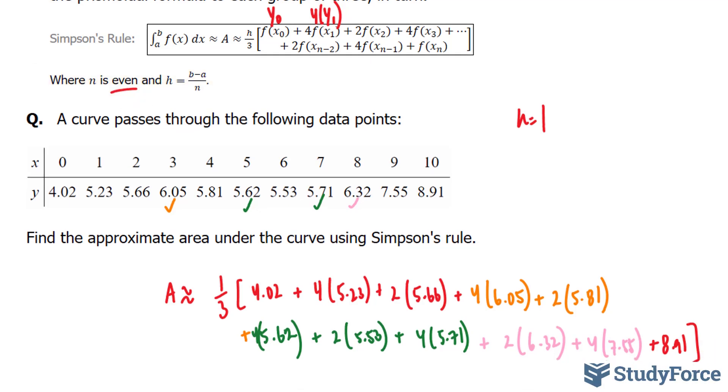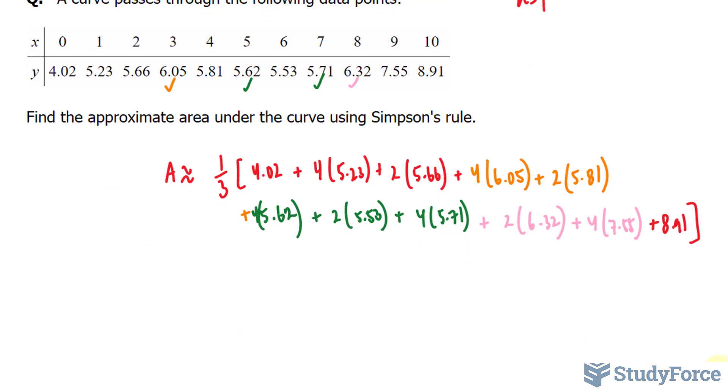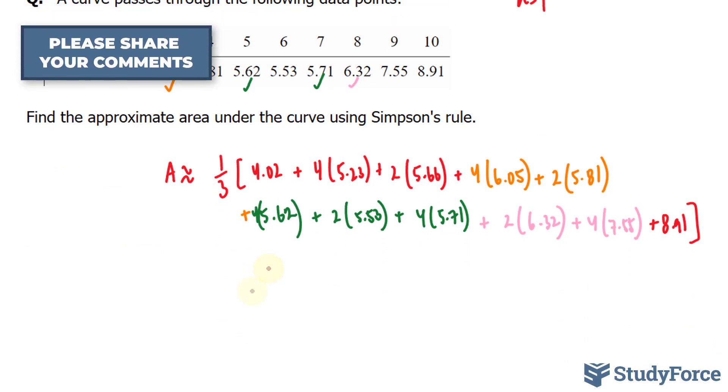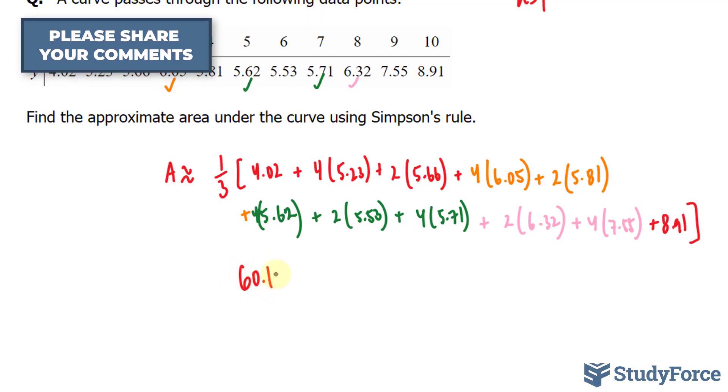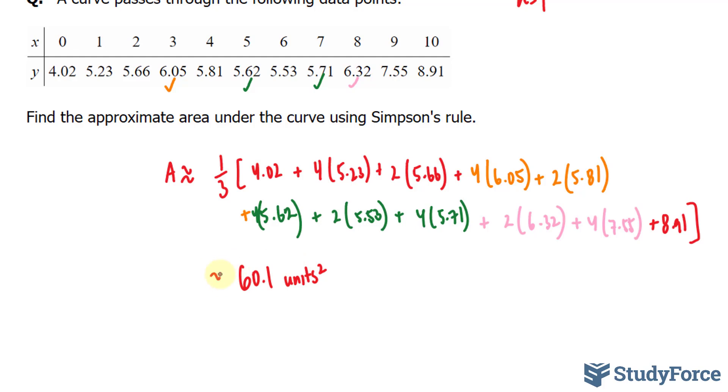Now we'll calculate this using our calculator. If you do it correctly on your calculator - I don't want to go through all of this, it'll take a while - you should end up with exactly 60.1 units squared. That's the approximate area for this curve.